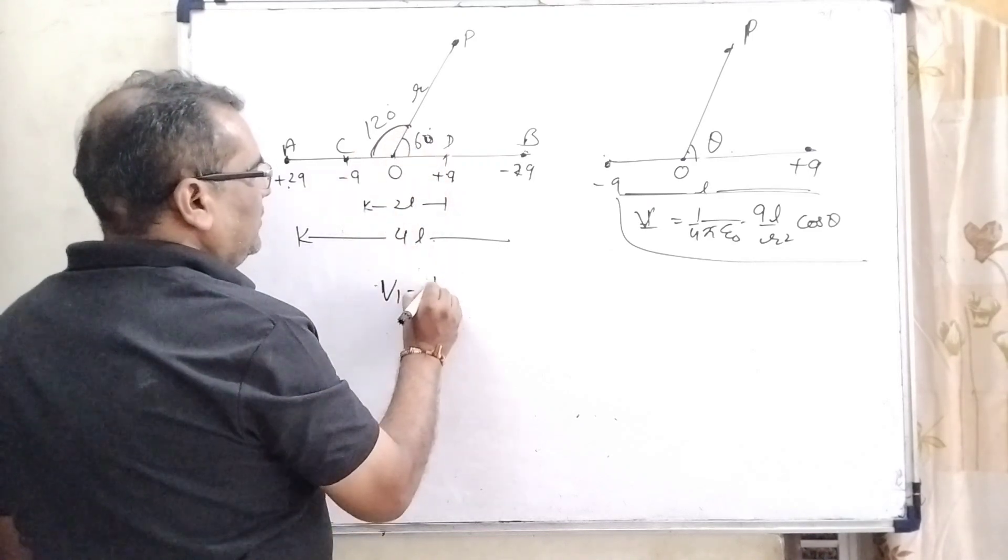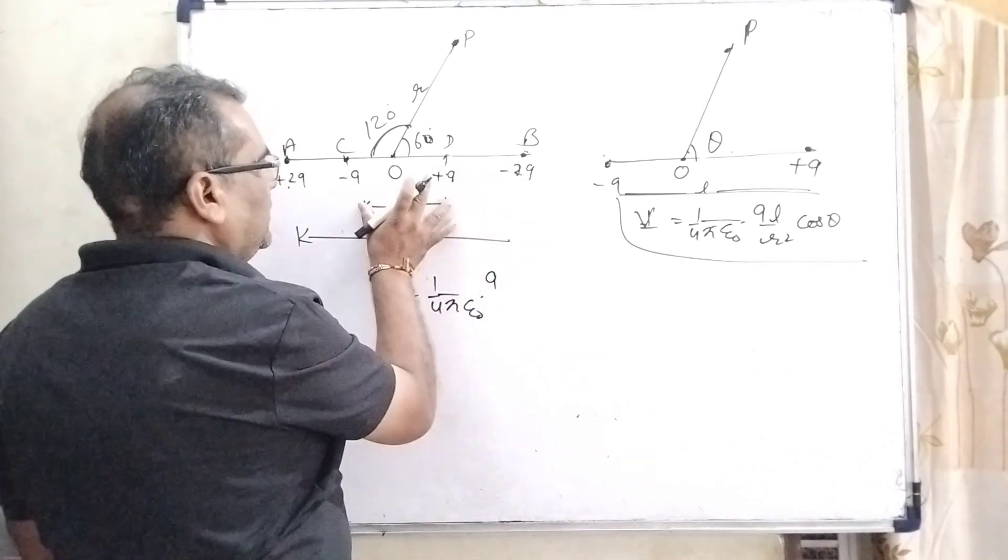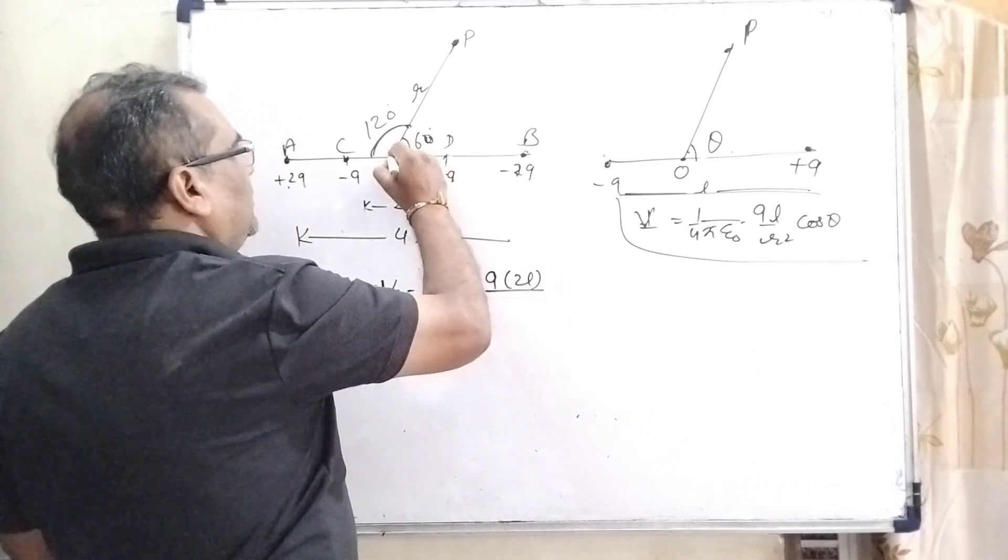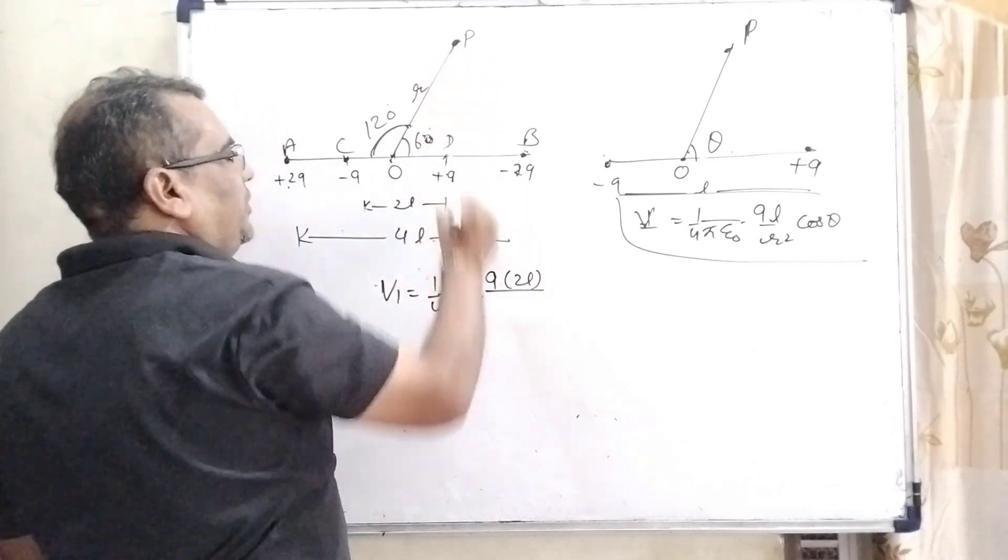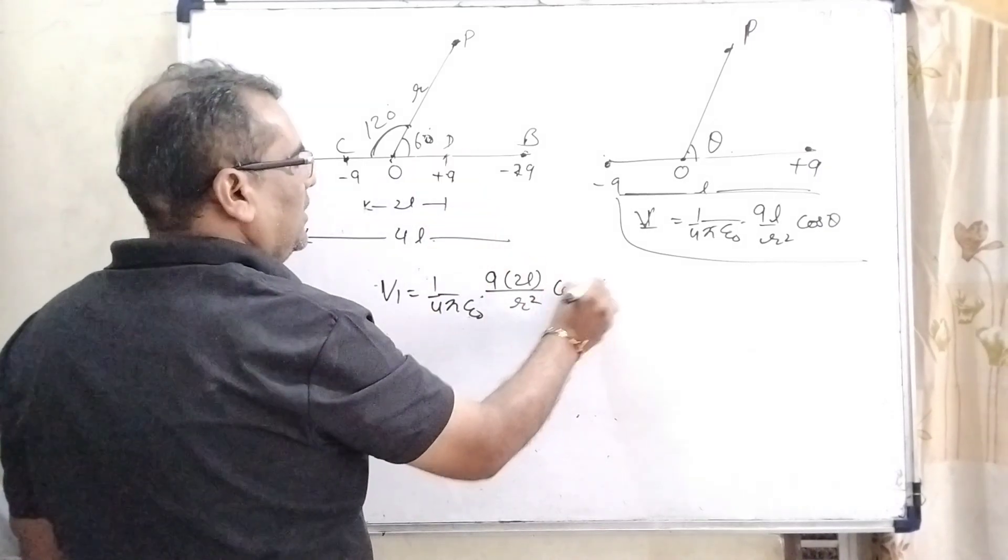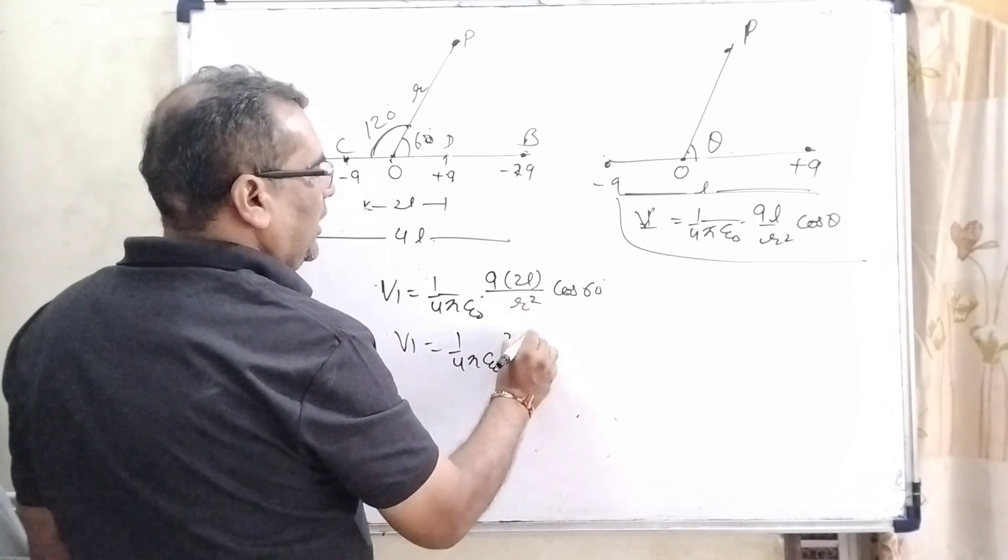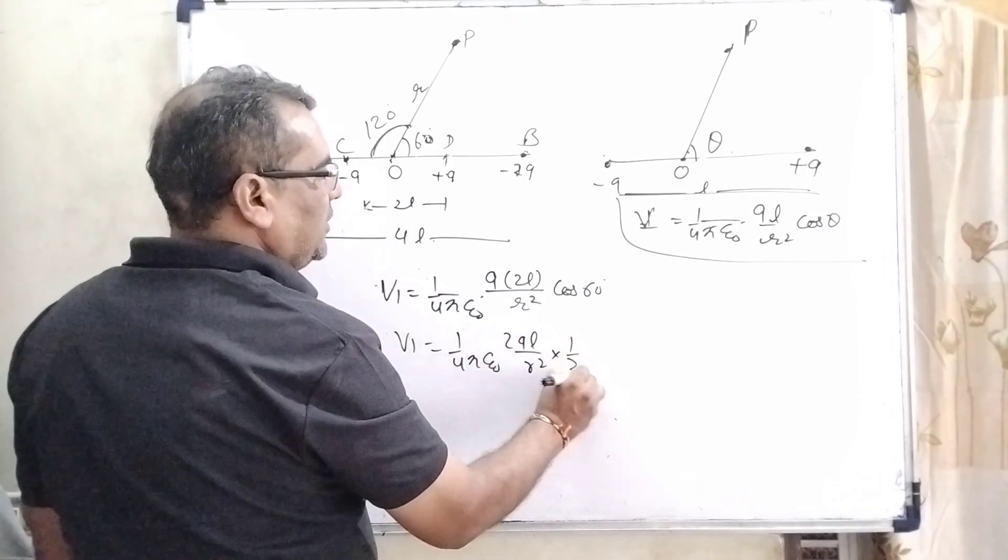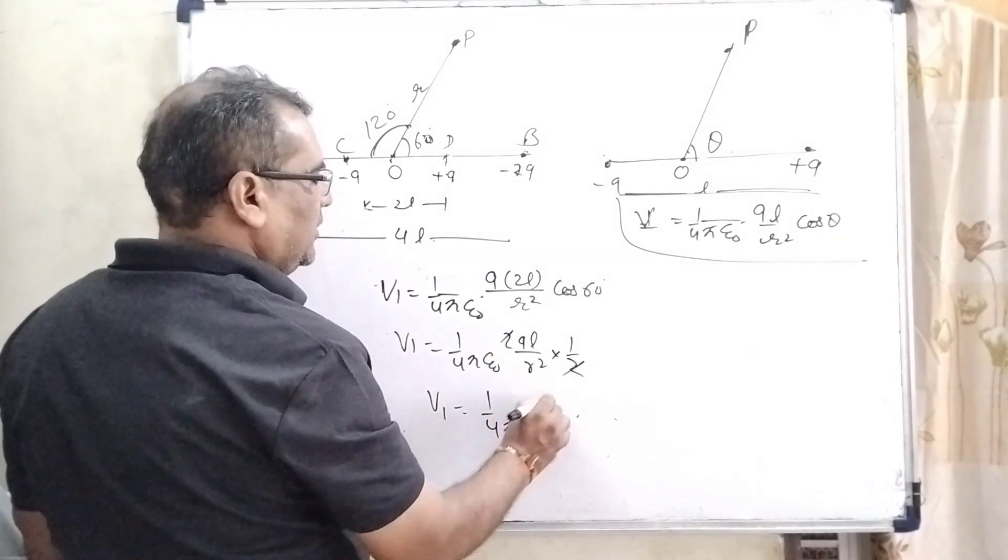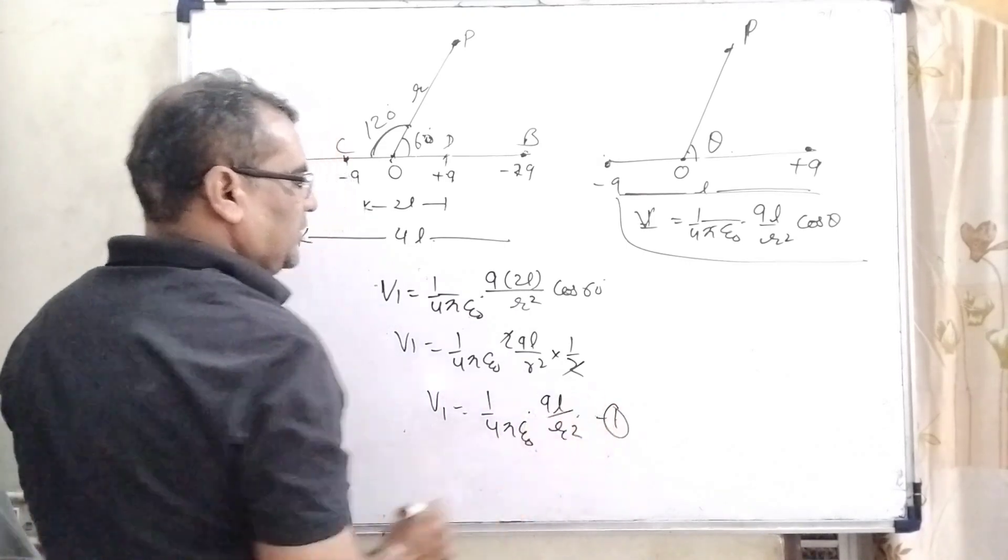Here V1 equals 1 upon 4 pi epsilon 0. Here the charge is Q and the distance is 2L, and the joining point O to P is R. So, R square and cos 60 degree. So, V1 equals 1 upon 4 pi epsilon 0, 2 QL, R square, cos 60 that is 1 by 2. So, 2 cancels out then V1 equals 1 upon 4 pi epsilon 0 QL by R square. This is the first equation.